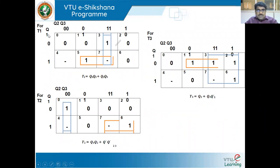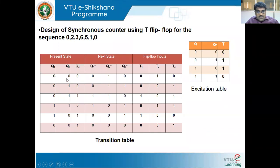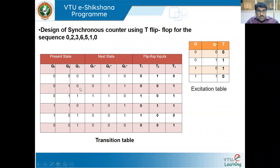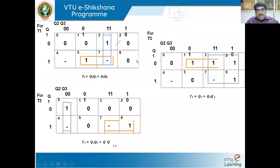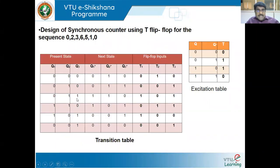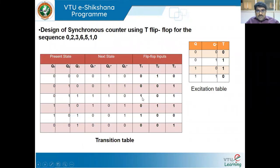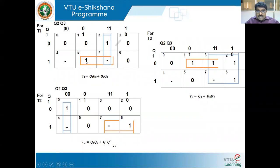For the three-variable K-map corresponding to T1 with variables Q1, Q2, Q3: for minterm 0 (000), T1 is 0; for cell 2 (010), T1 is 0; for cell 3 (011), T1 is 1; for cell 6 (110), T1 is 0. Be careful when filling K-maps for arbitrary counters. Use don't-cares for unused states. After grouping with don't-cares, I get T1 = Q1·Q3 + Q2·Q3.